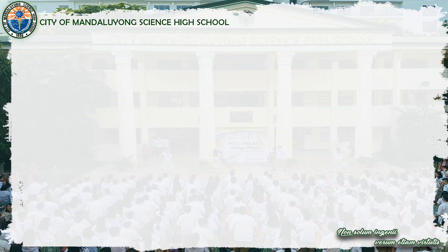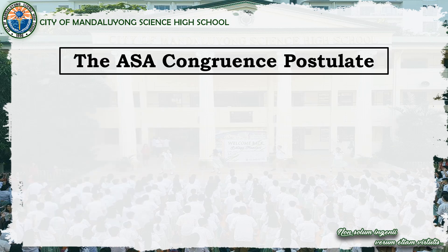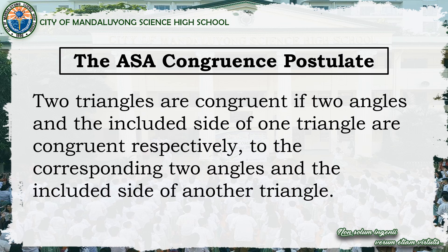Next, let's discuss the ASA congruence postulate. Two triangles are congruent if two angles and the included side of one triangle are congruent respectively to the corresponding two angles and the included side of another triangle.